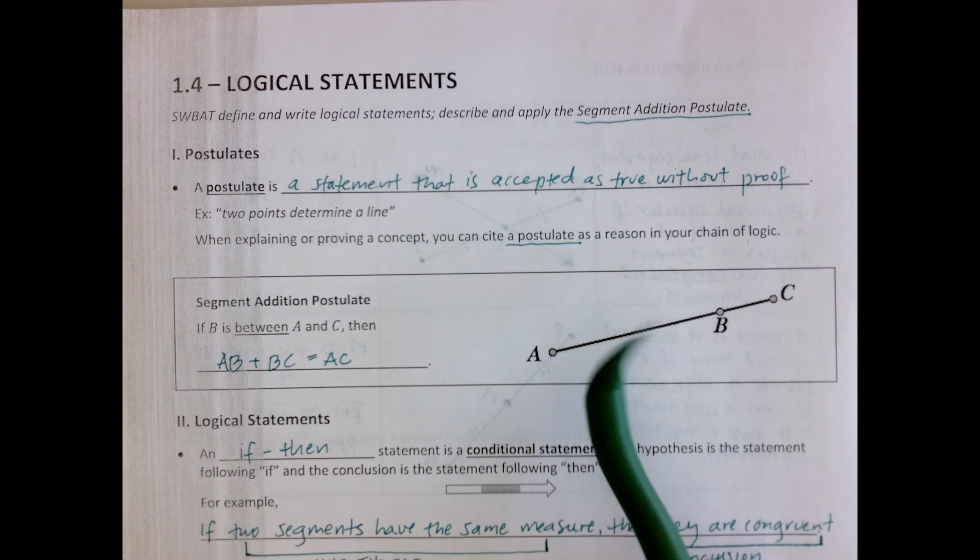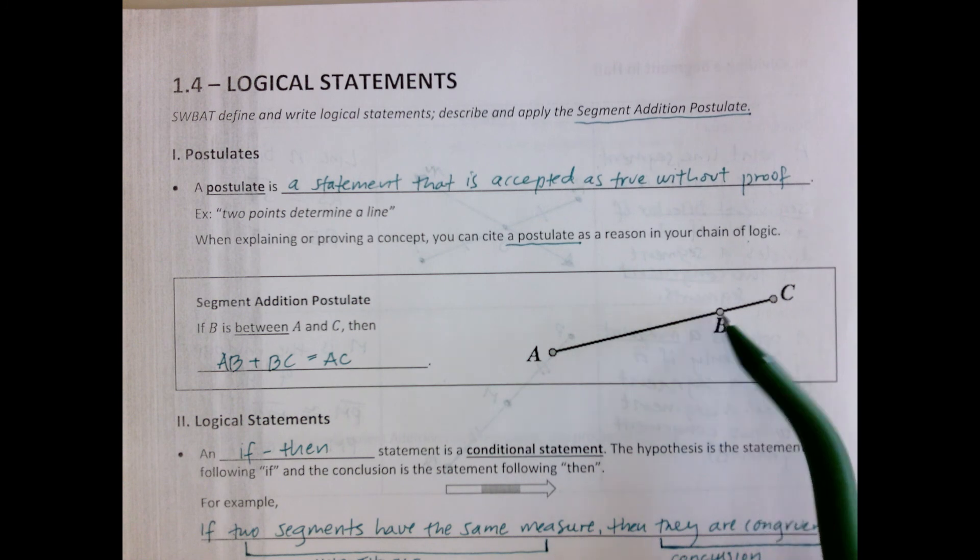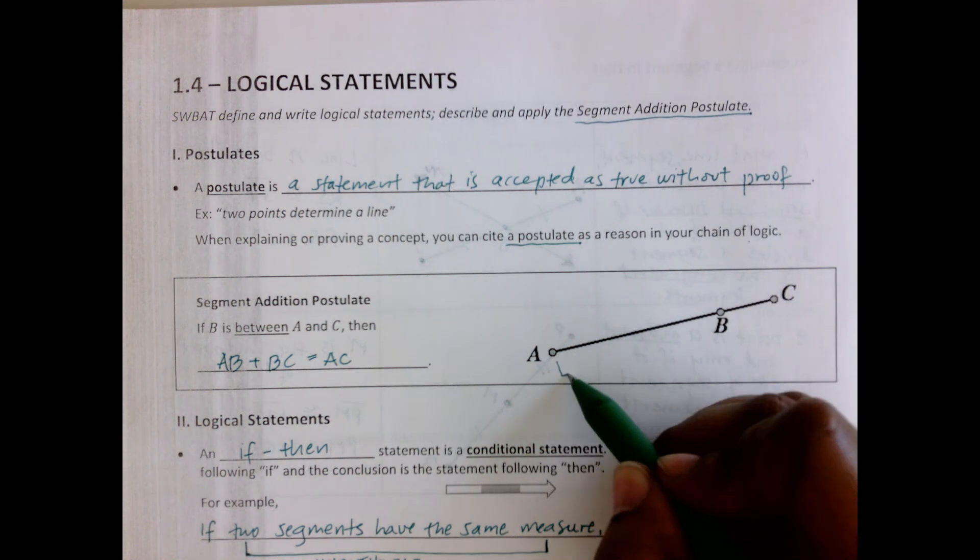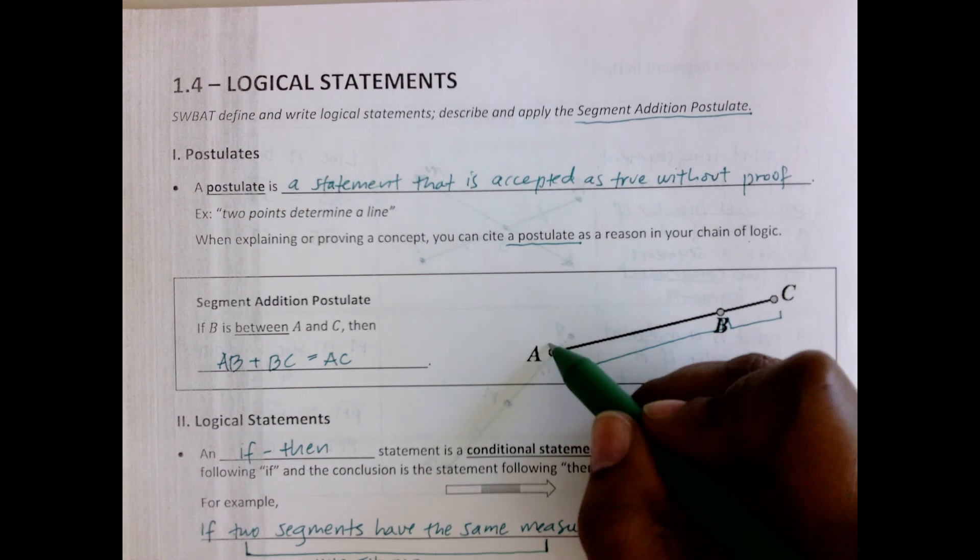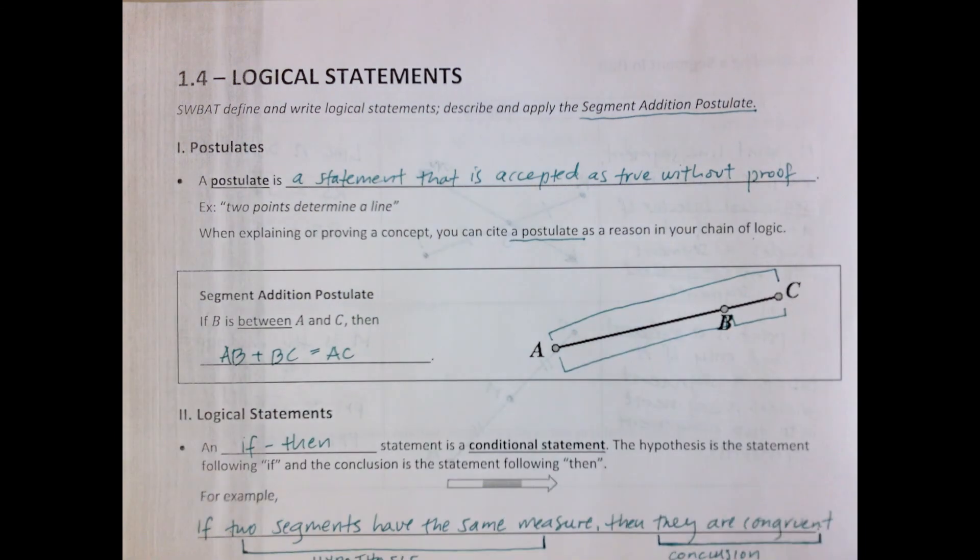Very simple. If we take this segment, the length of that, add it to this, it'll make up the whole thing. So it's like saying, you take this piece, and you add this piece, you get the whole piece. So that's the segment addition postulate.